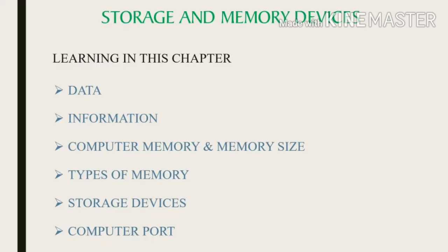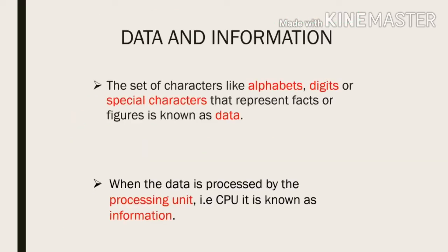First of all, we will see what we are going to learn in this chapter: data, information, computer memory and memory size, types of memory, storage devices, and computer port. Now we will discuss about data and information. The set of characters like alphabets, digits, or special characters that represents facts or figures is known as data. And when the data is processed by the processing unit, that is CPU, it is known as information.